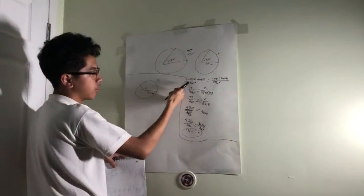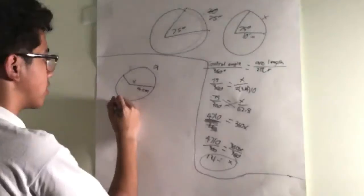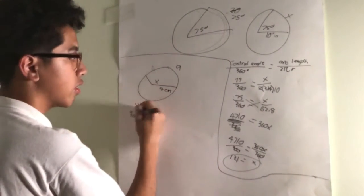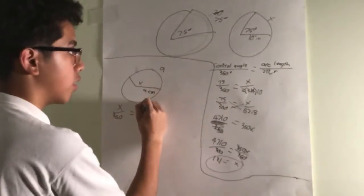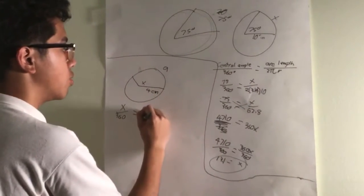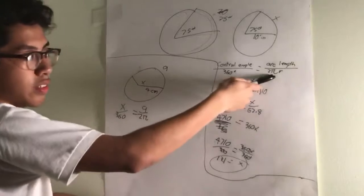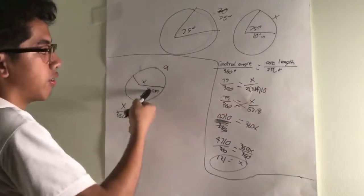The central angle is unknown, so we will use it for x. x over 360 equals arc length, which is 9, over 2 pi. Since the radius is r, it would be 4.